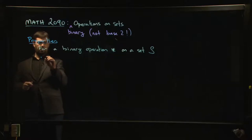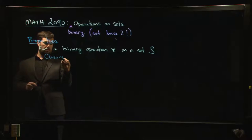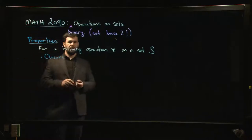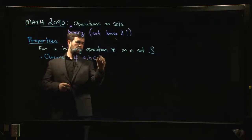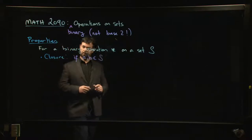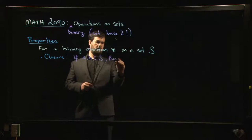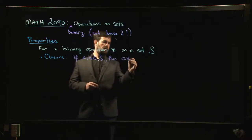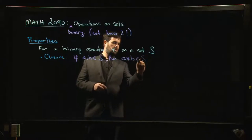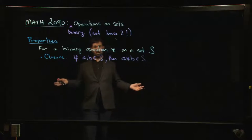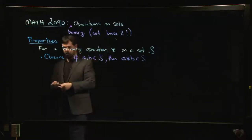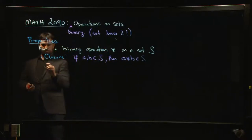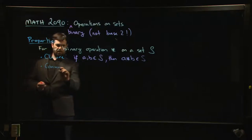One of the properties we've seen already is the closure property. The closure property says that if a and b are both elements of your set S, then so is a star b. Whenever you take two elements of your set and combine them using this binary operation, you get a new element of the same set.